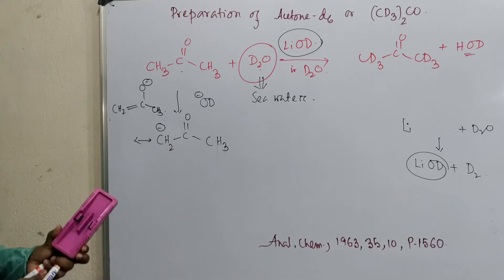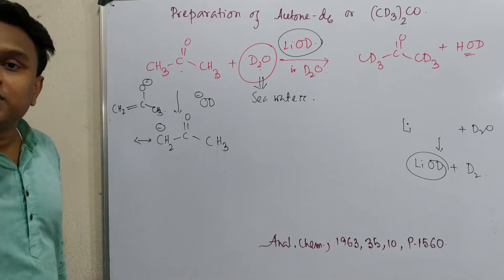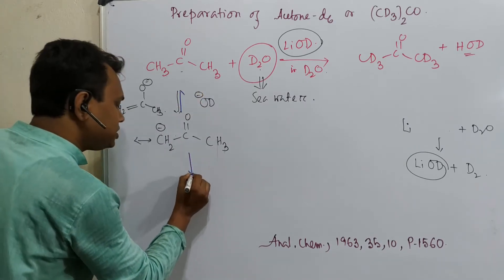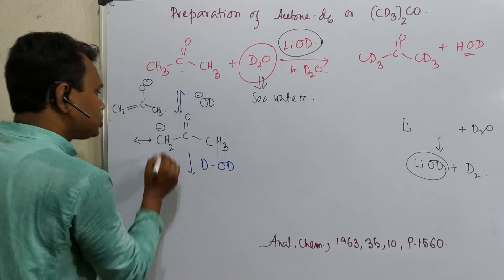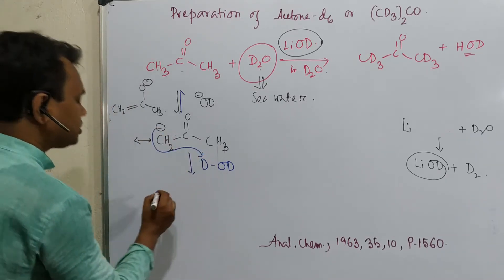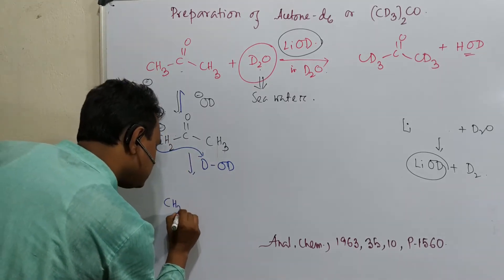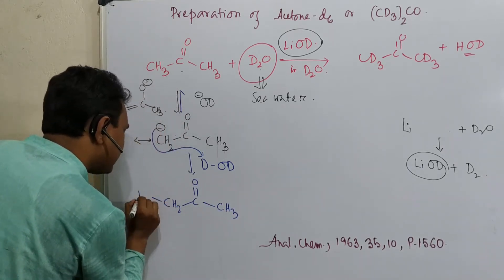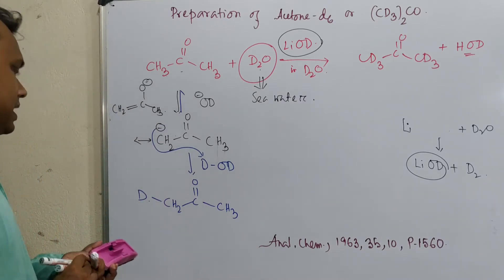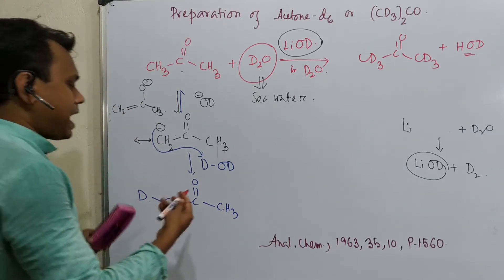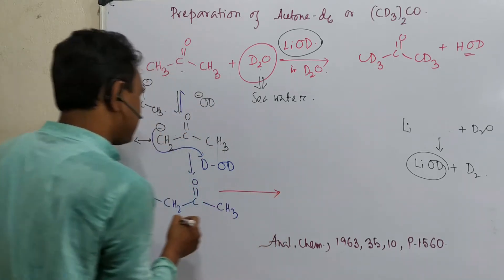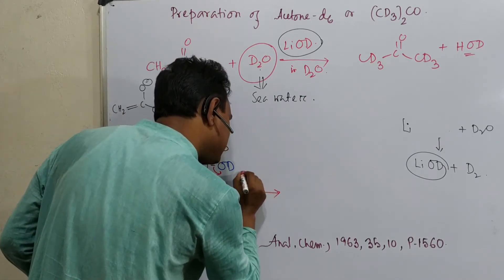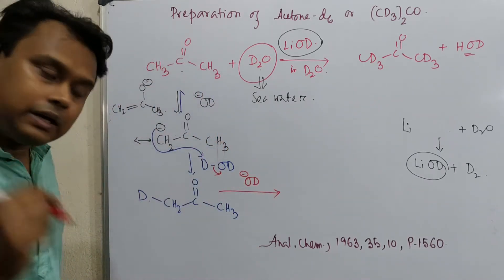Now what happens next? This is actually not an irreversible process, this is a reversible reaction. In the reaction medium, there is DOD, means D2O. So what it can do is abstract this proton. In the reaction medium, what it produces is CH2D-CO-CH3. Next thing, another molecule, in this case what it produces is that the base OD minus is regenerated.